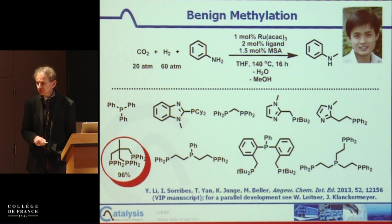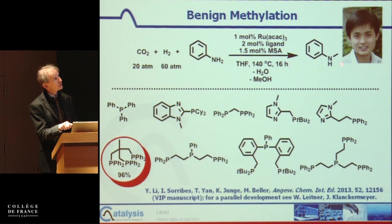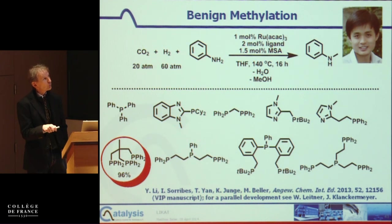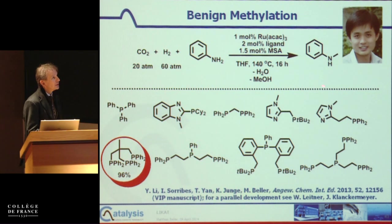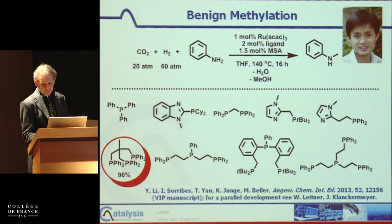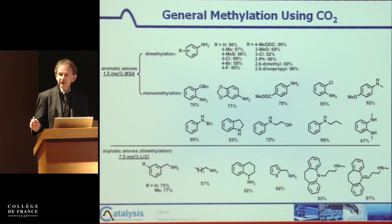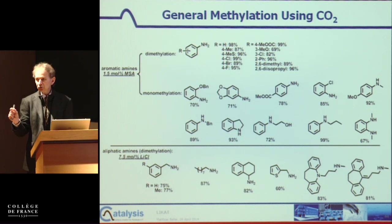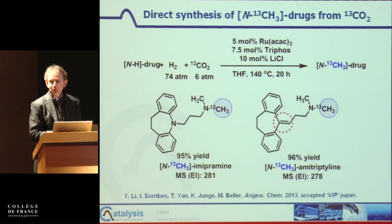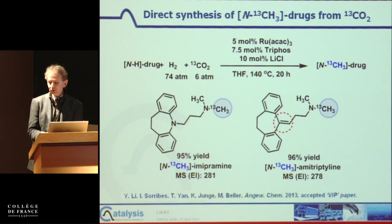I'll show you some examples with respect to hydrogenation — very recent work. We developed the first examples of carbon-nitrogen bond formation, published in Angewandte Chemie using silanes; Thibaut Cantat here in Paris published at the same time a similar procedure. Last year we developed the first hydrogenation — parallel to the work of Walter Leitner — and you can methylate using carbon dioxide as a methyl source to make C-N bond formation, producing organic molecules from it. You can even make labeled compounds for the pharmaceutical industry in a much cheaper way.